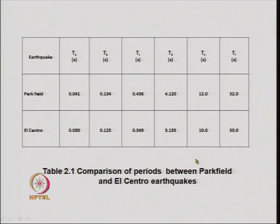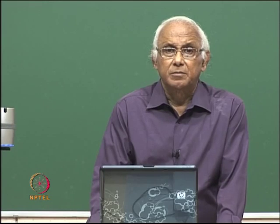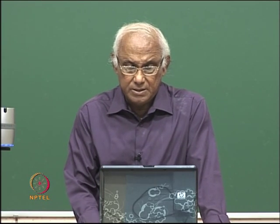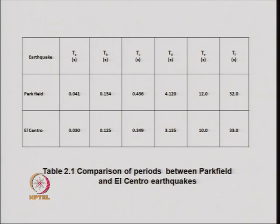These two earthquake records revealed that there could be differences between the values of T_A, T_B, T_C, T_D, T_E, and T_F, but the nature of the response spectrum can be approximated by a series of straight lines having the characteristic features discussed before.